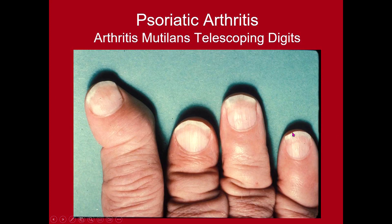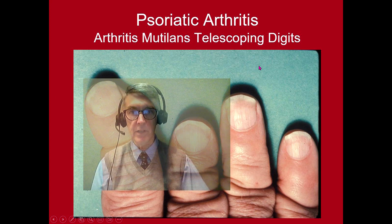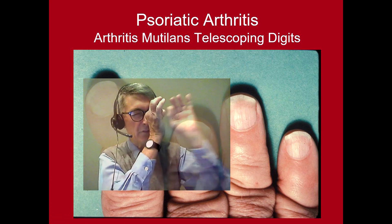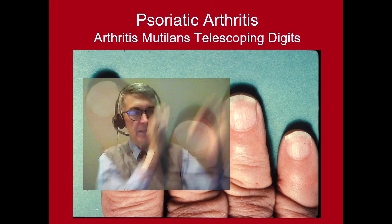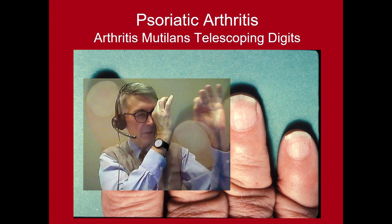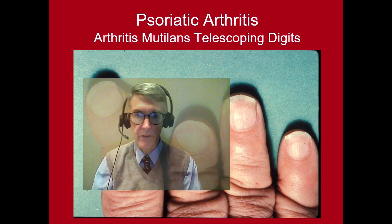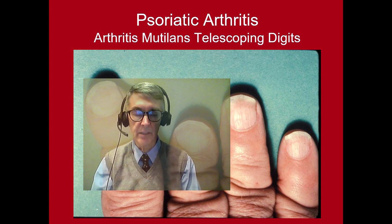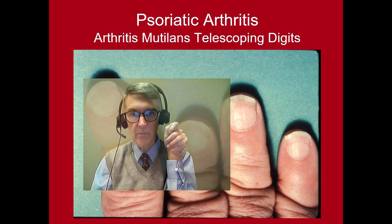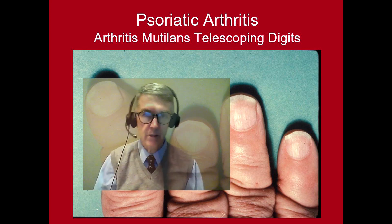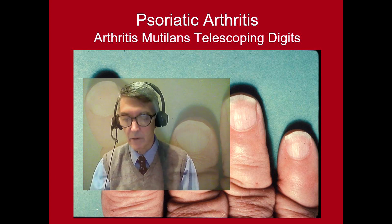This shows telescoping digits that can occur with arthritis mutilans, where there is actual retraction of the digit due to osteolysis of the bone. The reason it's called telescoping digits refers to old telescopes that would focus by sliding in and out, because the fingers look like the scope has slid in. Another name for this is opera glass hands, because focusing opera glasses also occurs by sliding in and out.